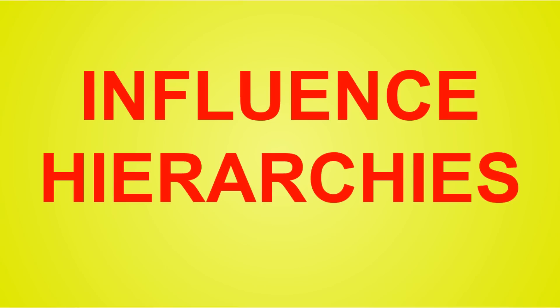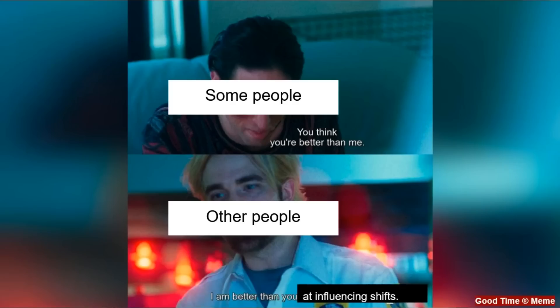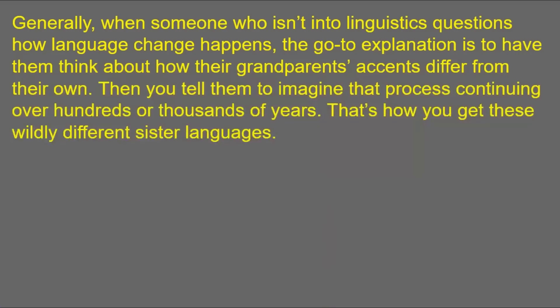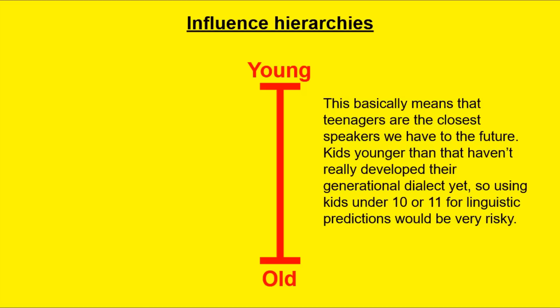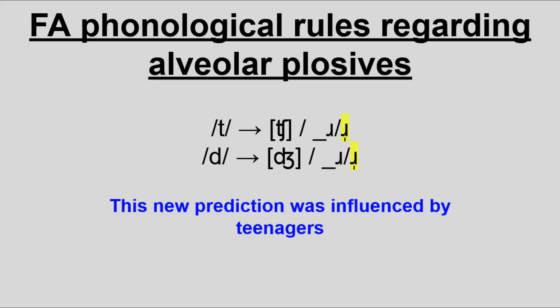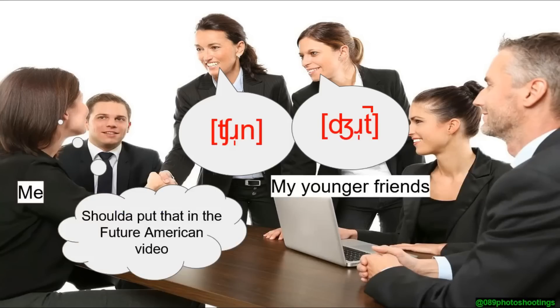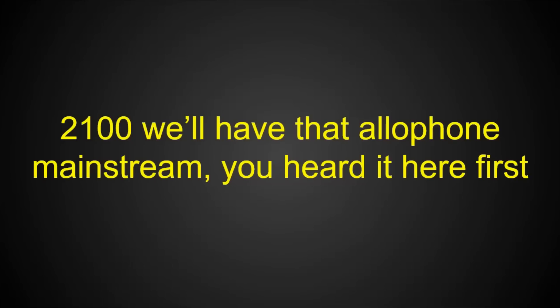Now to get into the real advice — the first thing I'll talk about is influence hierarchies, because not everyone has the same level of influence on the evolution of their native language. Some sectors of society have way more clout in determining the trajectory of their language, making it more likely that their features will become the norm. The first and most obvious hierarchy is young over old, because that's just the march of time at work. In any given linguistic group, younger people are closer to the future. It's a safe bet to prioritize the speech of teenagers, with people in their 20s and 30s not far behind. An example involving teenagers is the reason I decided to add the allophone extension of 'churn' and 'jurt' — I've noticed my younger friends often do it consistently.